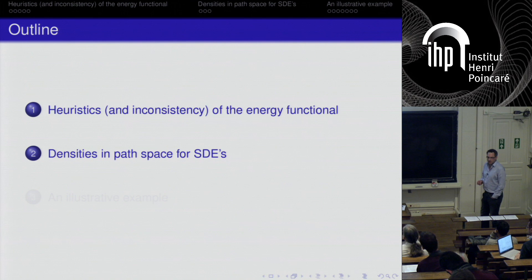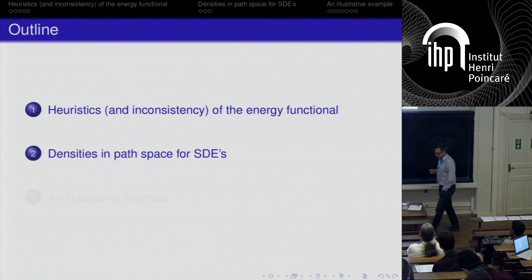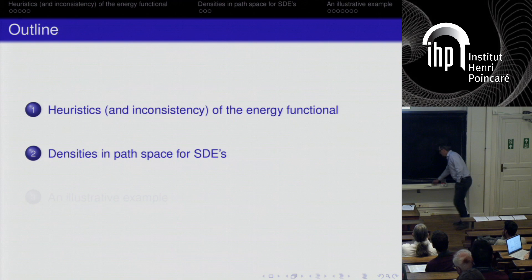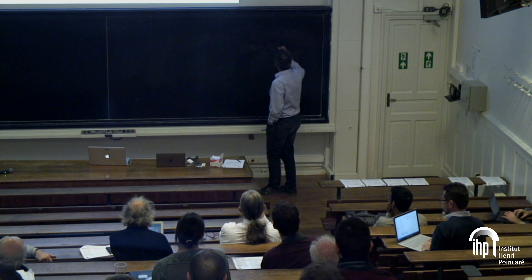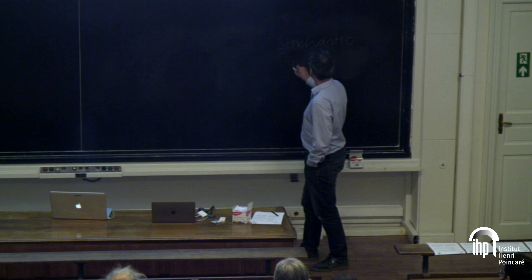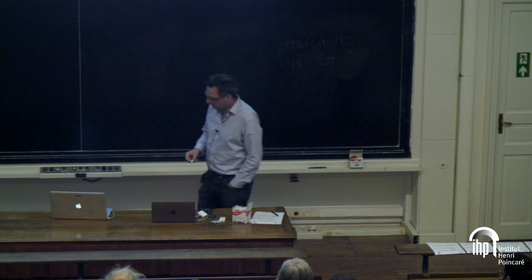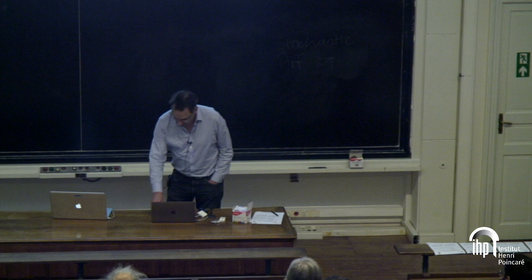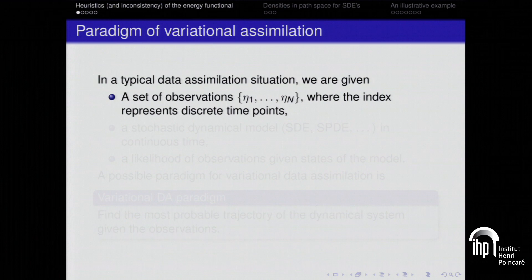This will not be a technical talk. In fact, the main point is to explain a very technical mathematical result in non-technical terms. Nonetheless, I want to introduce something called densities in path space for SDEs — Stochastic Differential Equations — such as stochastic climate models or stochastic dynamical systems used to understand and predict dynamical processes. I will give an illustrative example, and I think after this example you will agree that you cannot simply ignore this result.